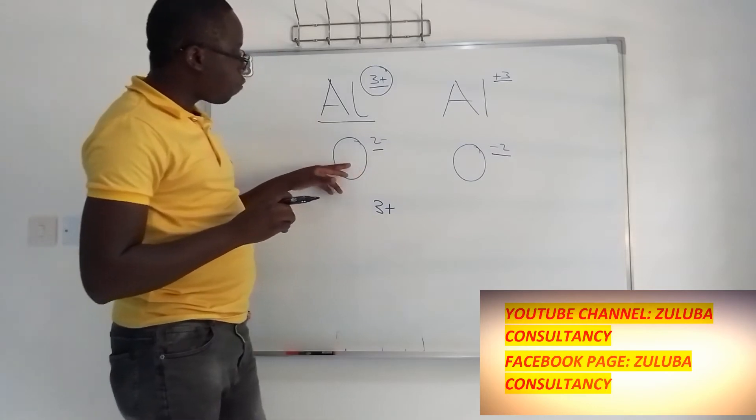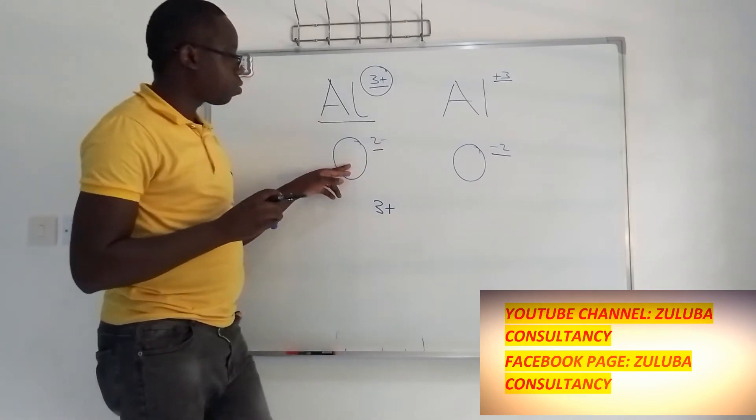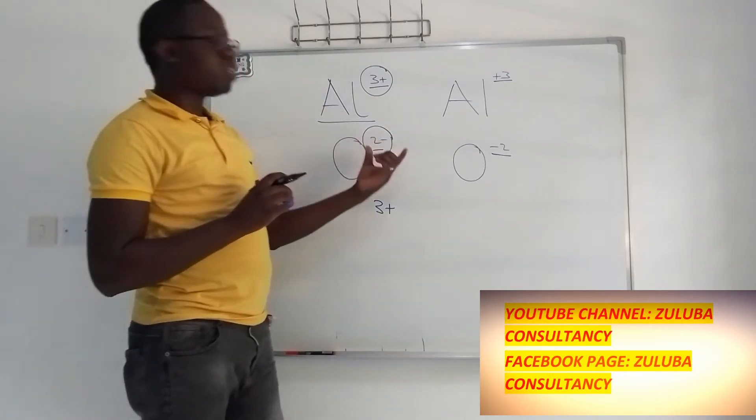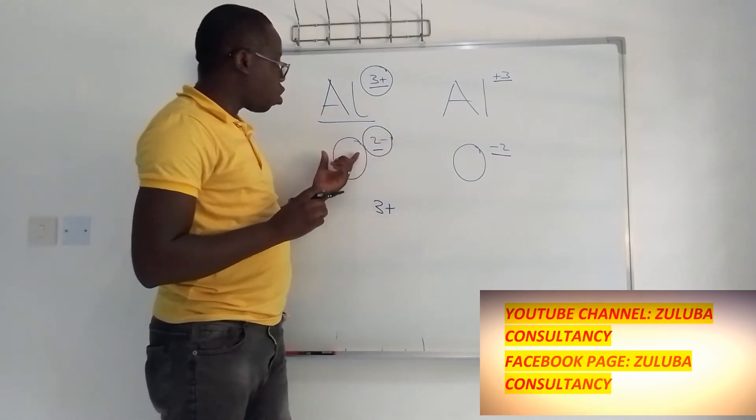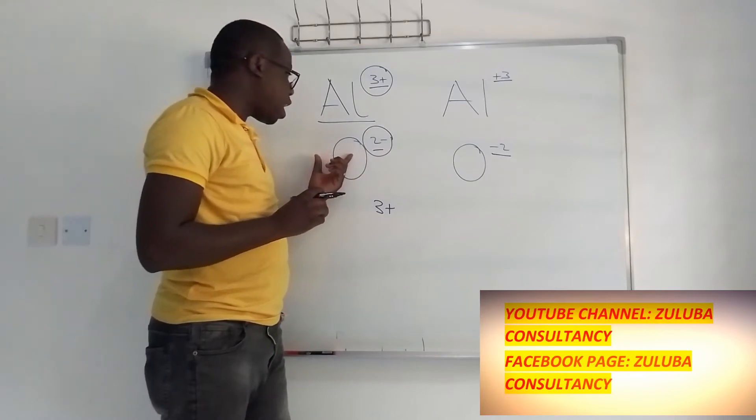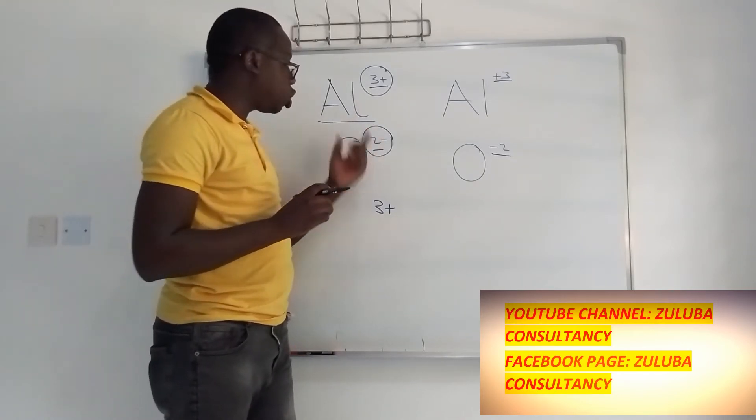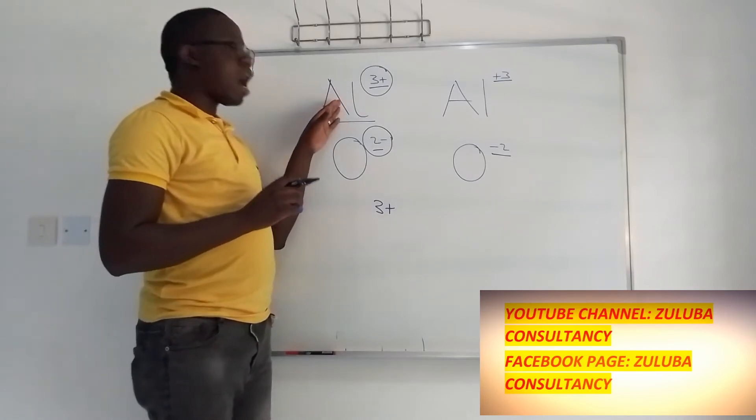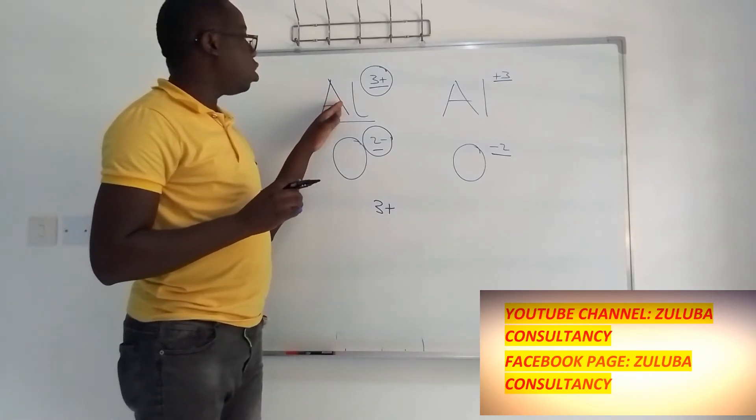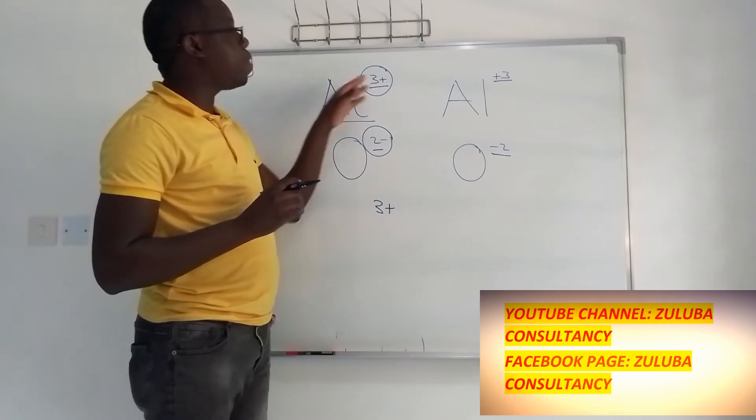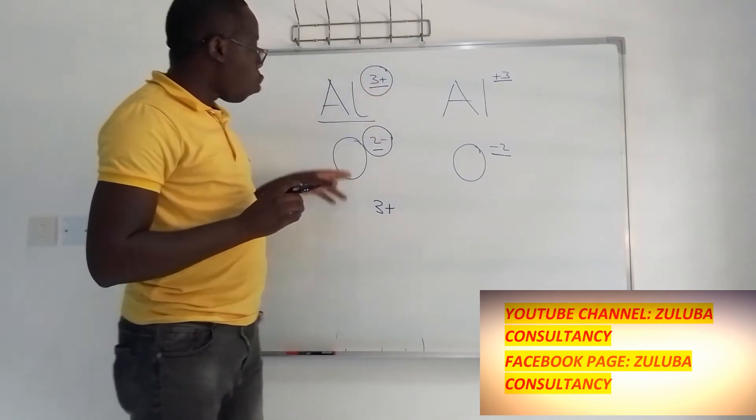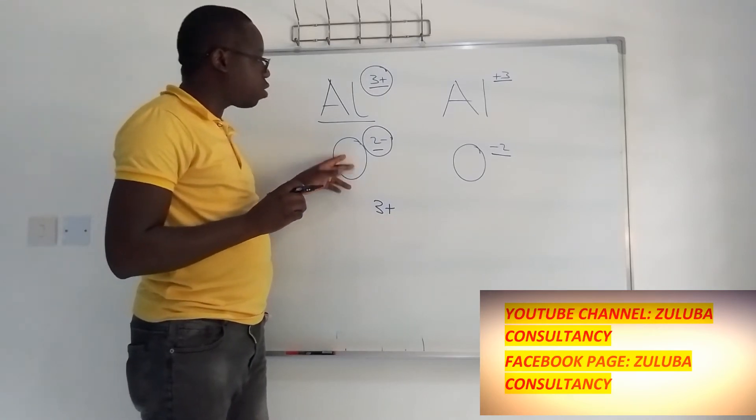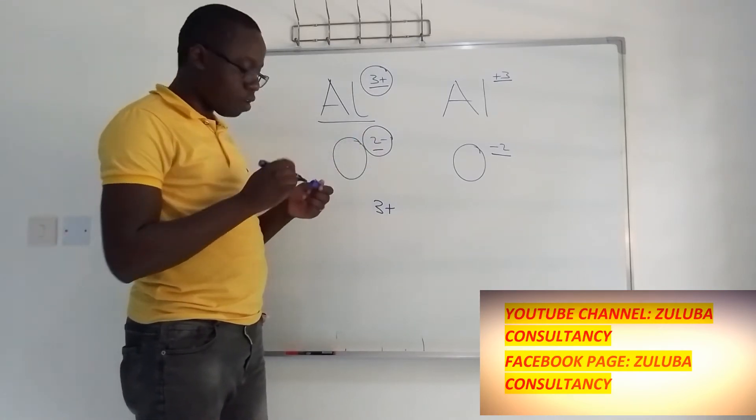What of oxygen here? For it to have two negative, it simply tells us that this oxygen is now an ion and it has gained two electrons. So when an atom loses electrons it becomes a positive ion.